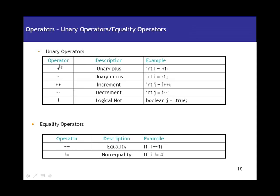The next set is the unary operators. The first two are the general plus and minus, which determine whether the value of a number is positive or negative — so plus 1 and minus 1. The next two are plus-plus and minus-minus, which are the increment and decrement operators. The increment operator increments the value, and the decrement operator decrements the value.